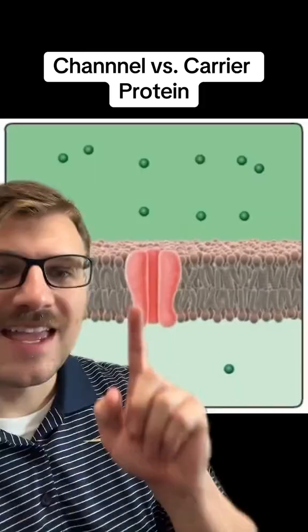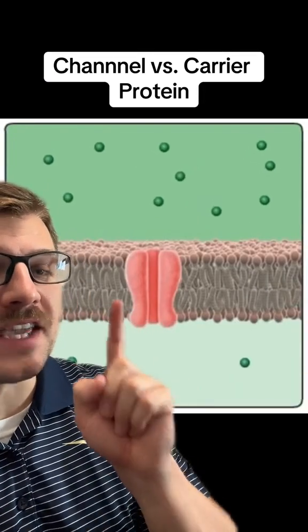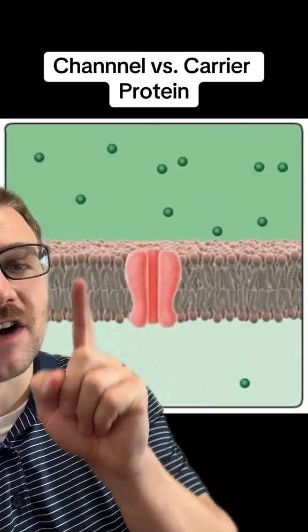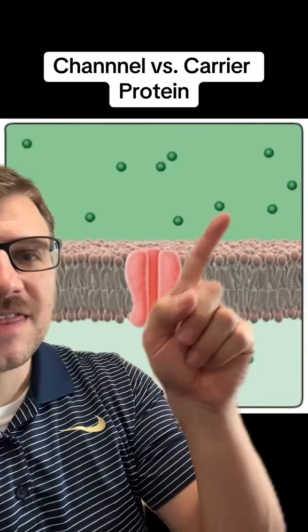Let's go over the difference between channel and carrier proteins. Both of these are membrane proteins, which means they're found in the membranes of cells. This is a channel protein — you can see it's embedded in the phospholipid bilayer of a cell.